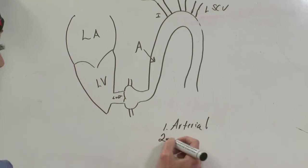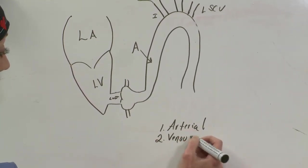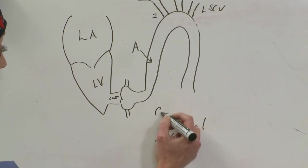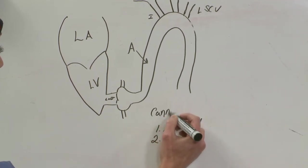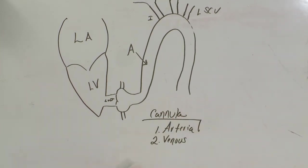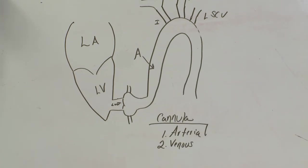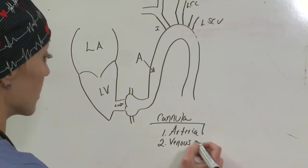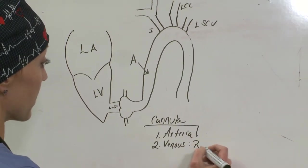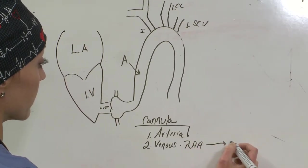Number two, you need your venous cannula. And again, we're talking about cannulation. Next is going to be your venous cannula, and that's not—this is your arterial side—but your venous cannula is going to go from the right atrial appendage down towards the inferior vena cava.